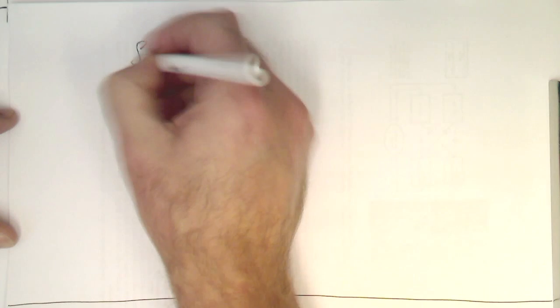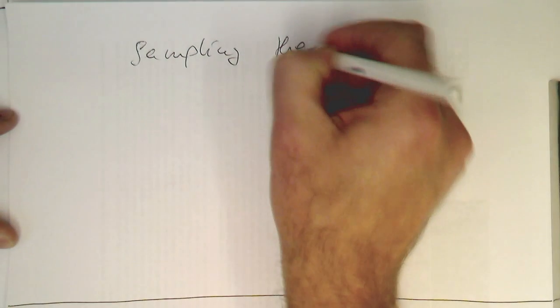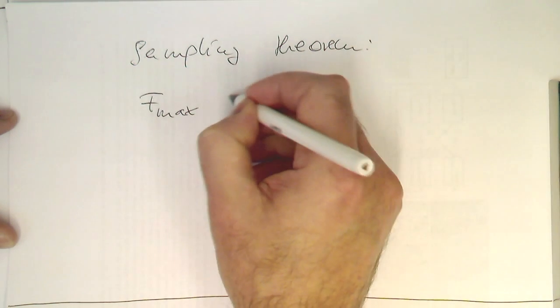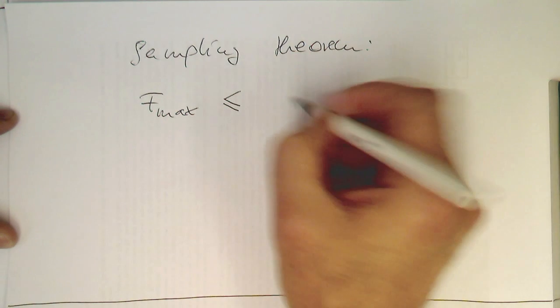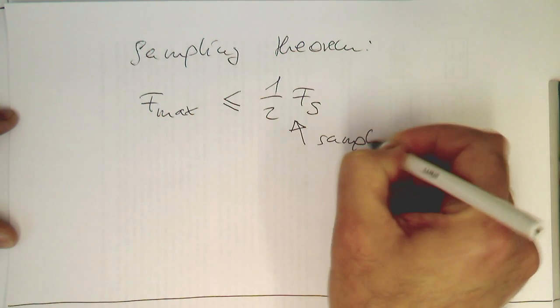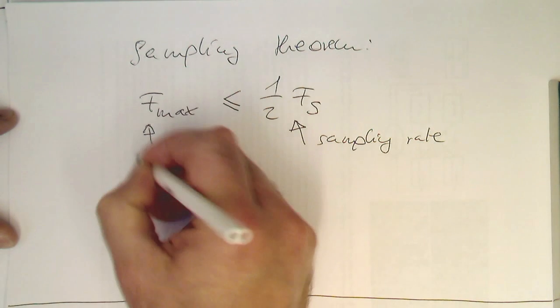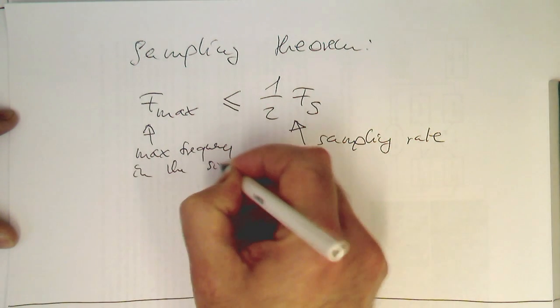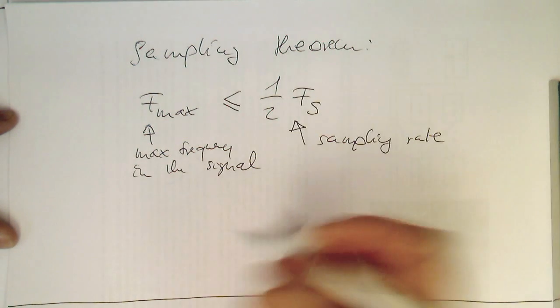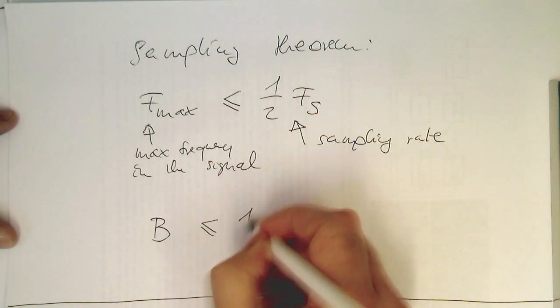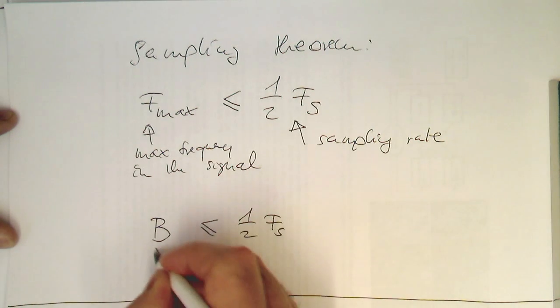Let's just summarize our findings. Initially, our sampling theorem was that f_max, or the maximum frequency in the spectrum of a signal, needs to be lower or equal to half of the sampling rate. Sampling rate and maximum frequency in the signal. However, now we know that this is too strict. It is actually the bandwidth of the signal which needs to be below half Fs. That's the bandwidth.